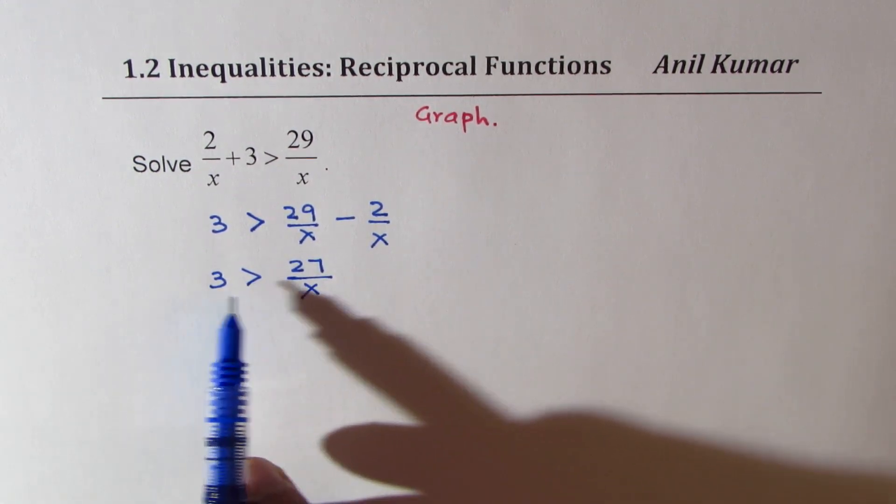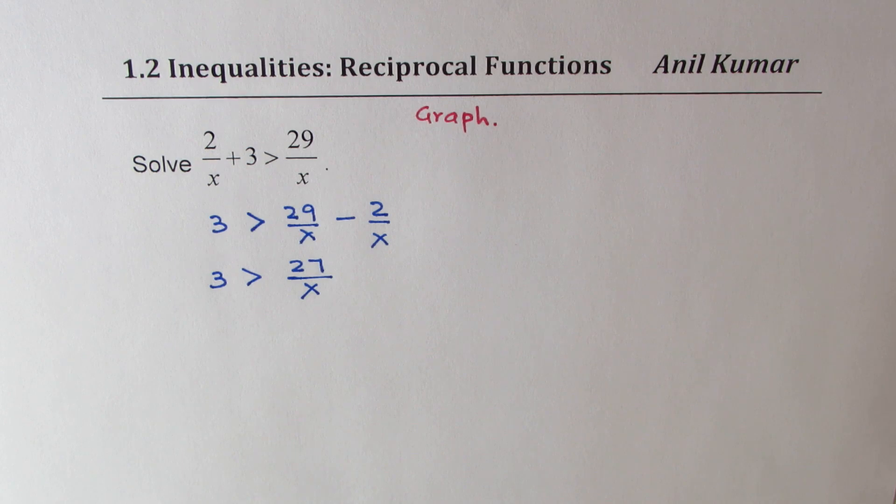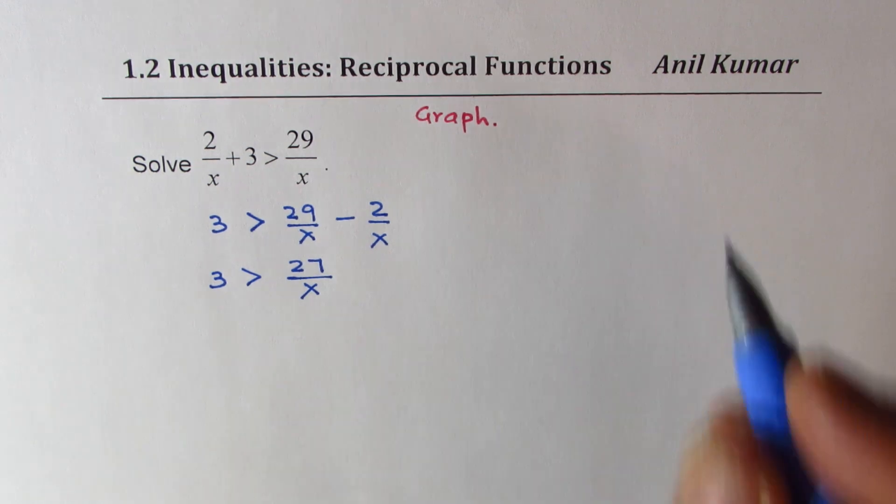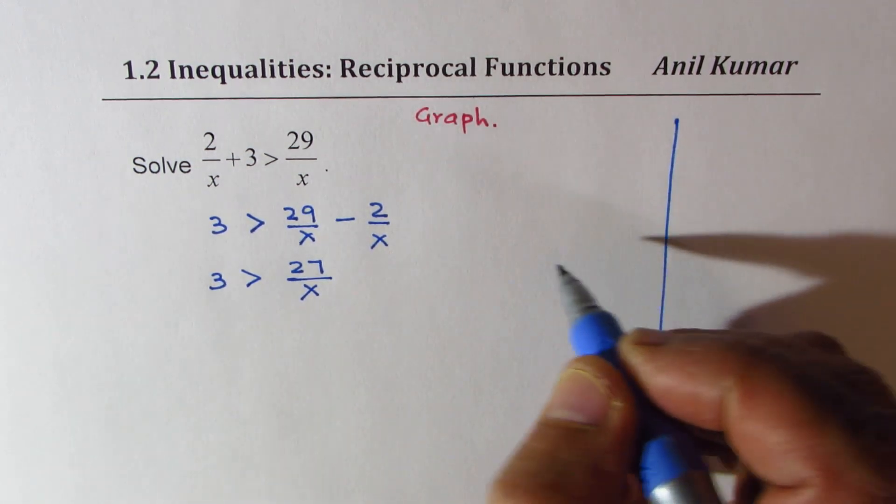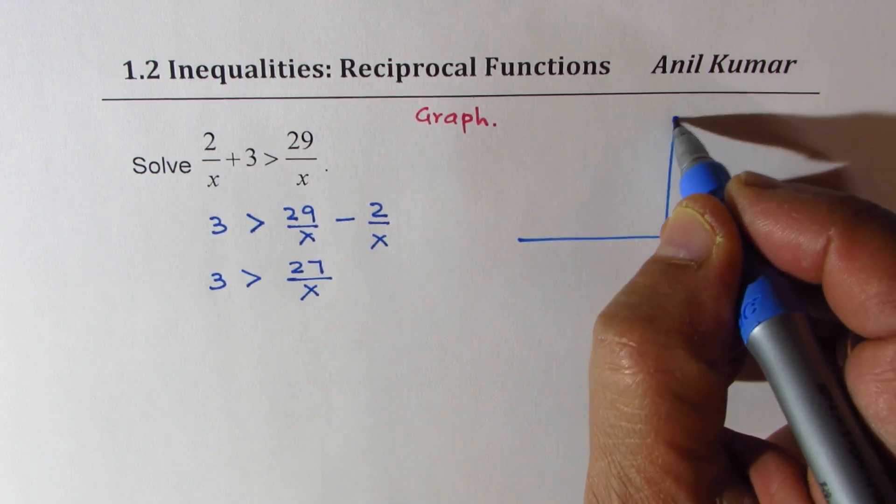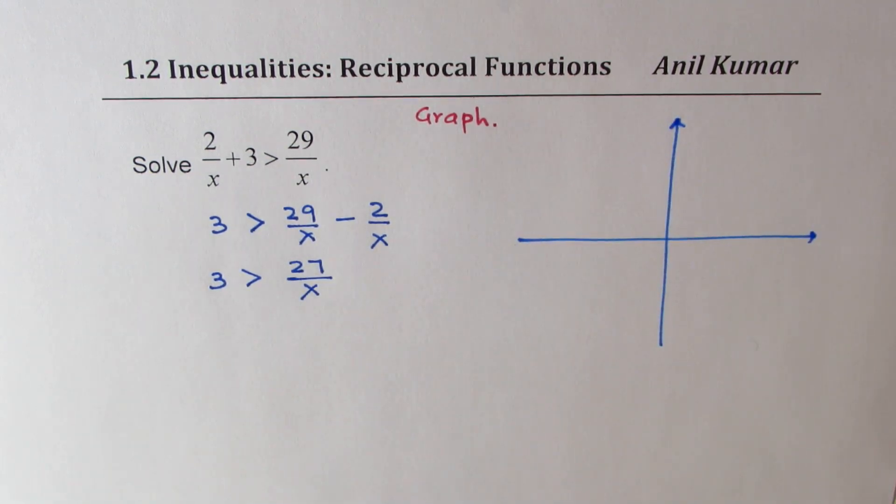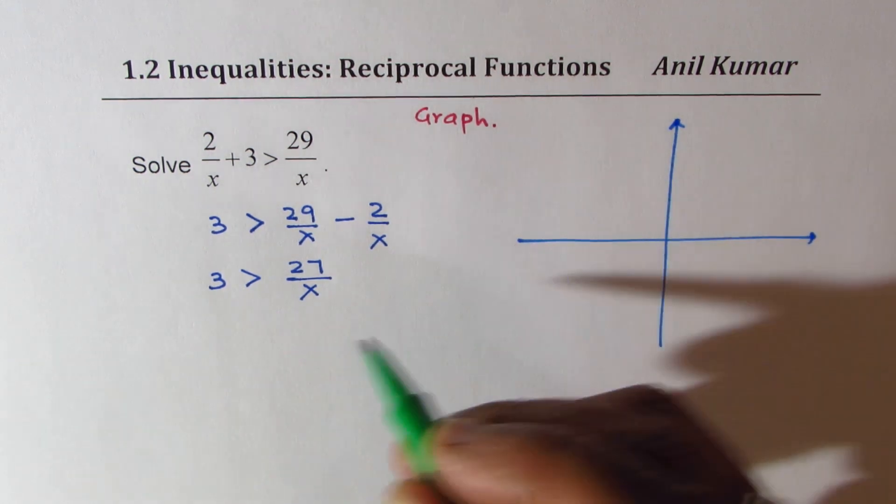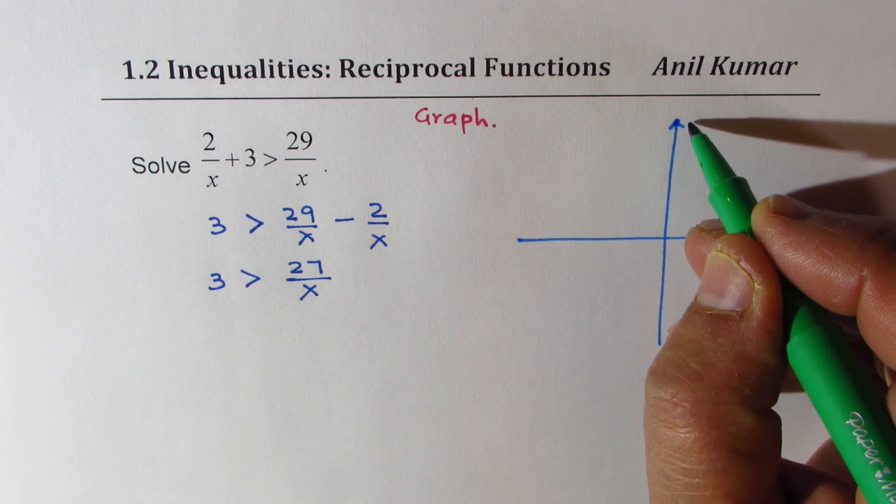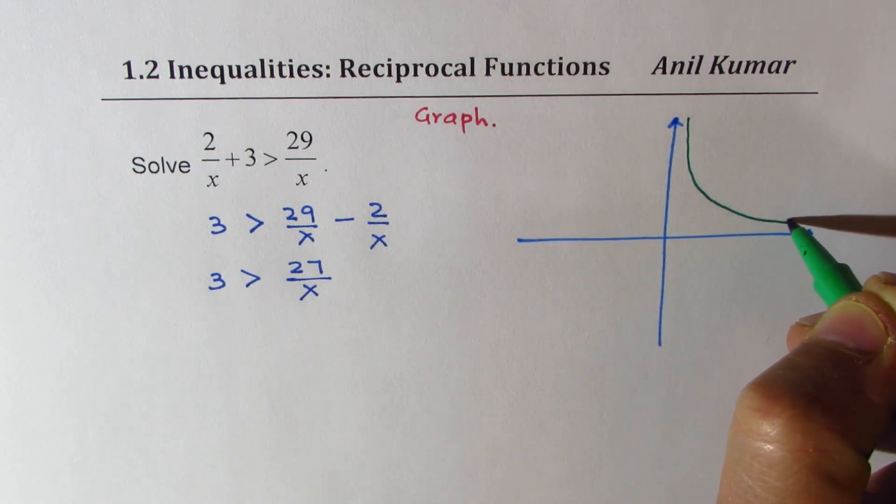Now we can plot both of these graphs and graphically see the solution. Let's say that is our coordinate system. 27/x will be a graph which is 1/x vertically stretched. So here is a very approximate diagram.